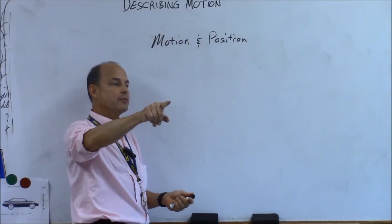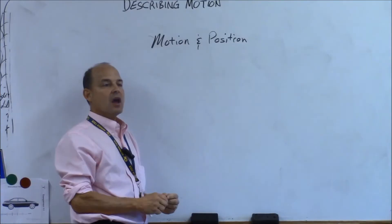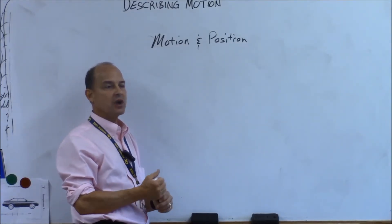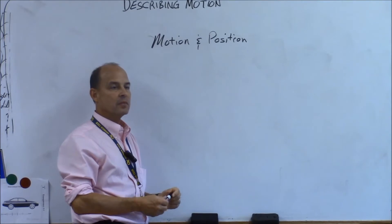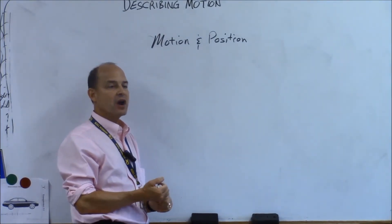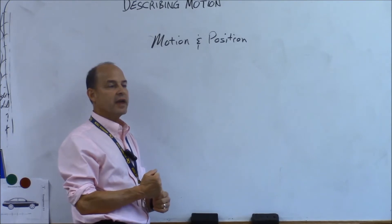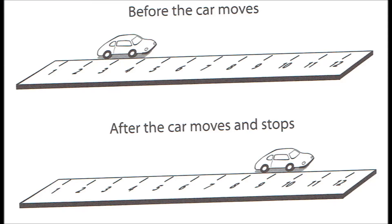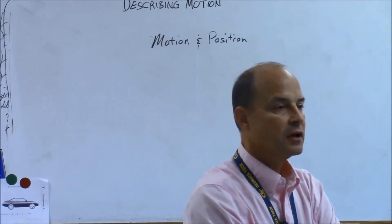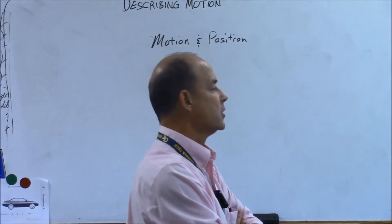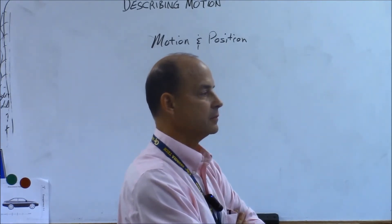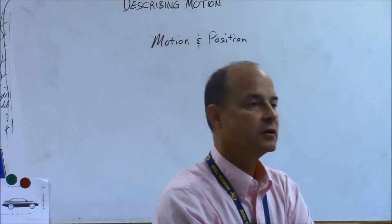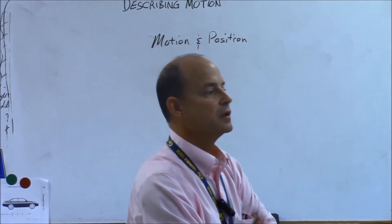If you look at the smartboard, we have Gracie's car. I want you to look at the position of Gracie's car at the beginning, which is at the top, and then at the bottom. Answer this question: how far did Gracie's car move? If you answered four, you're wrong. If you answered six, you're right.